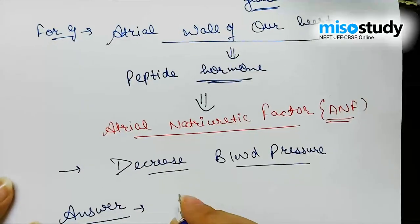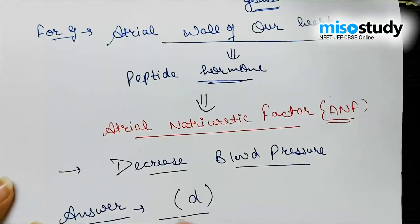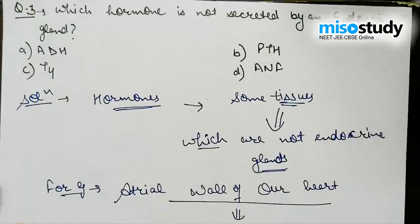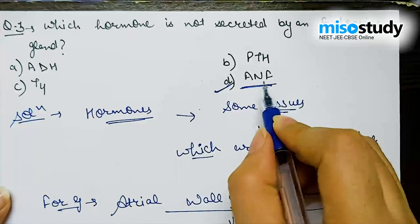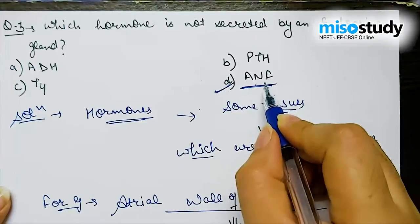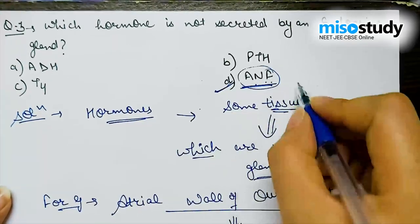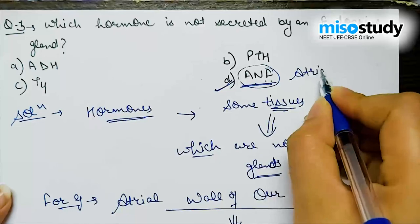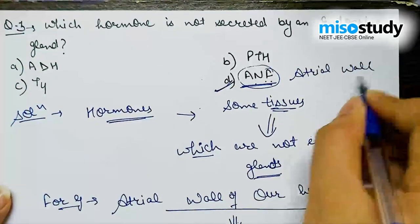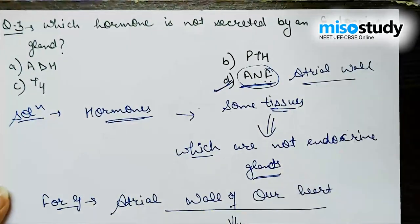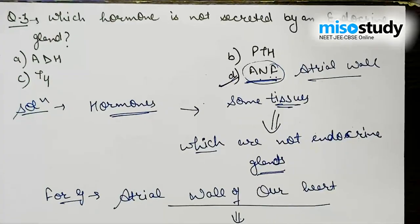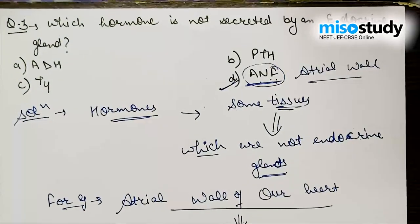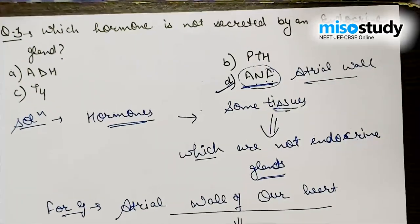After this discussion, the right answer is Option D. ANF — Atrial Natriuretic Factor — is secreted from the atrial wall of the heart and is not secreted by an endocrine gland. Let's move on and discuss the next question.